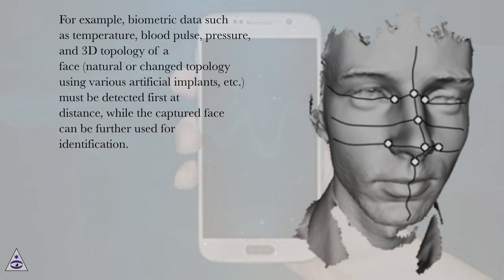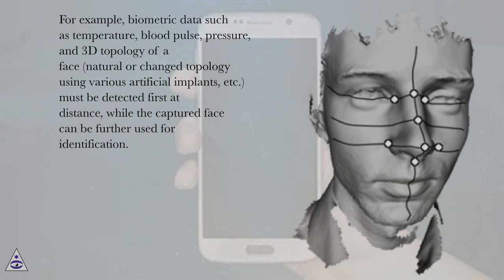For example, biometric data such as temperature, blood pulse, pressure, and 3D topology of a face — natural or changed topology using various artificial implants — must be detected first at distance, while the captured face can be further used for identification.